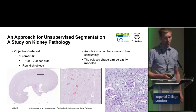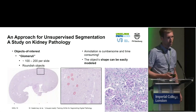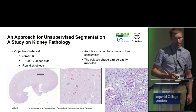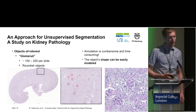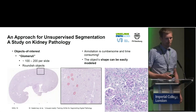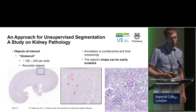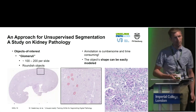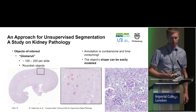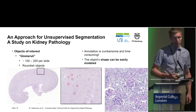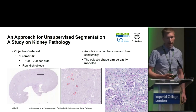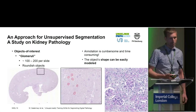We consider a study on kidney pathology specifically. Here we consider the glomeruli, which are roundish objects where we have about between 100 and 200 per slide. Annotation of these objects is quite time consuming and cumbersome.